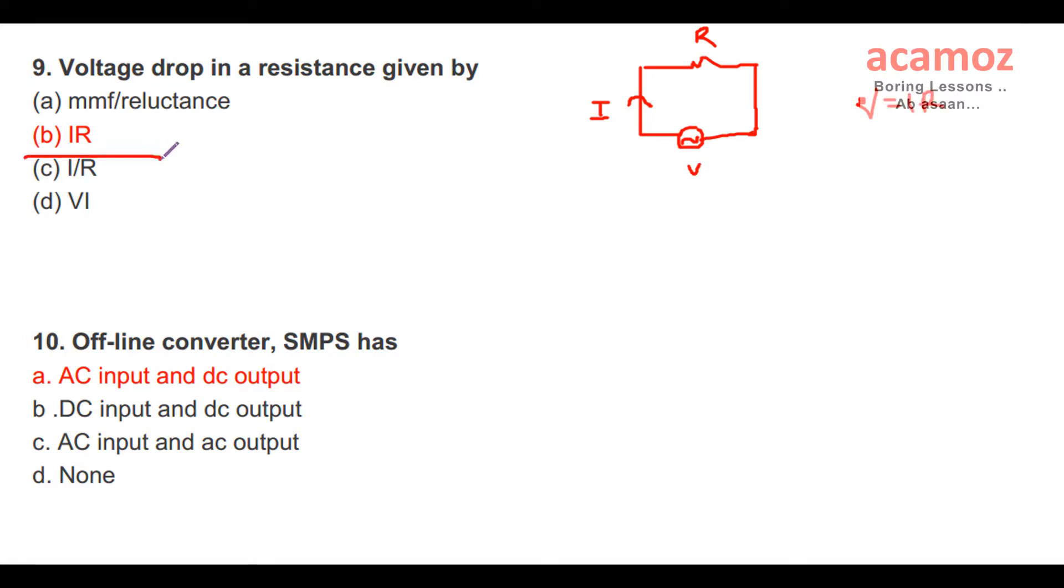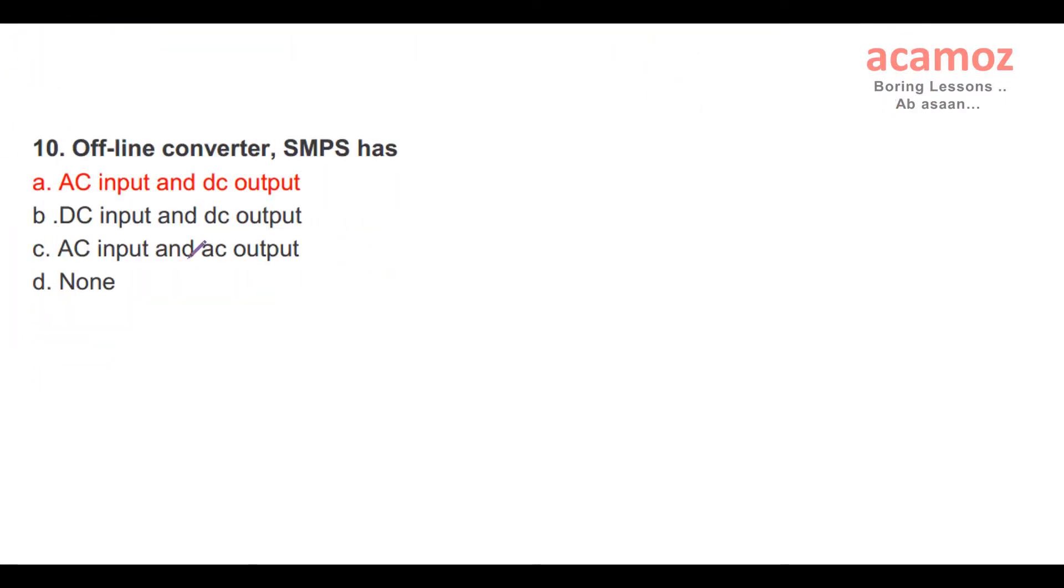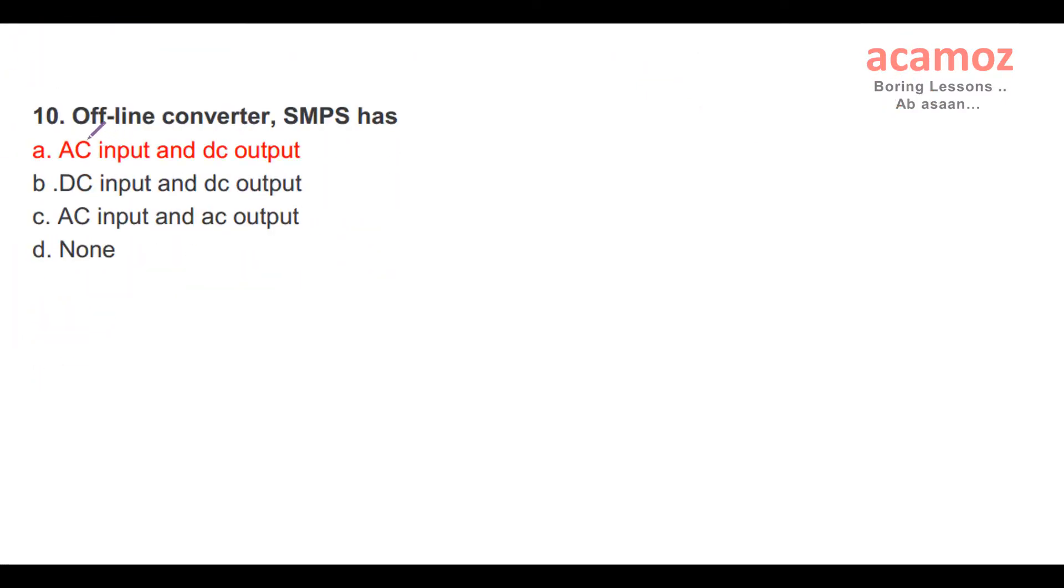Tenth question: Off-line converter SMPS has? SMPS is a circuit, a device which converts - input is AC and output is DC output, to operate any DC circuit. So AC input and DC output.